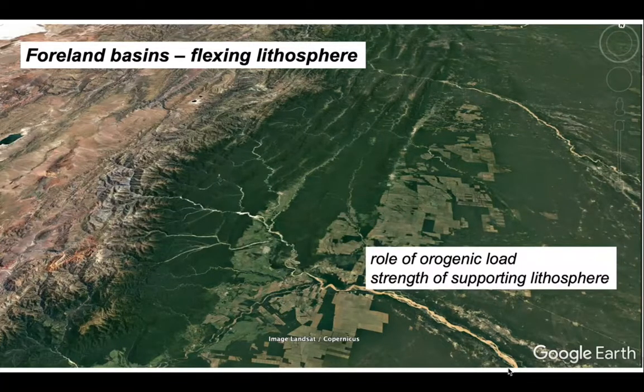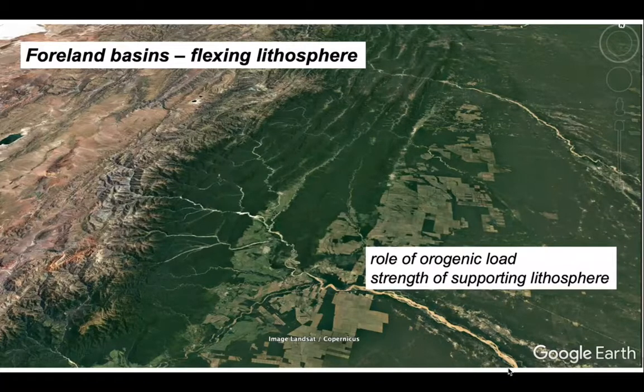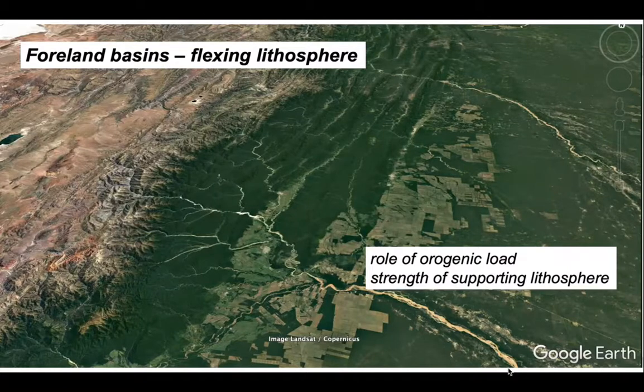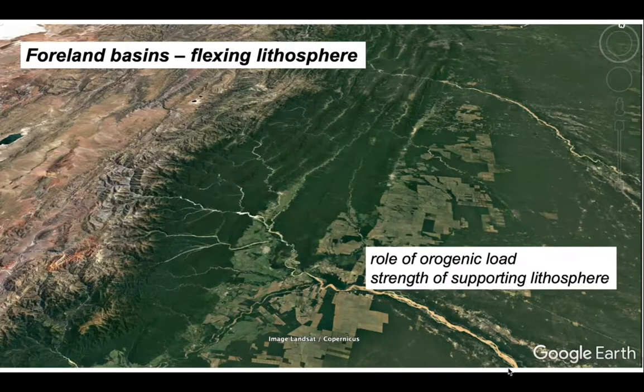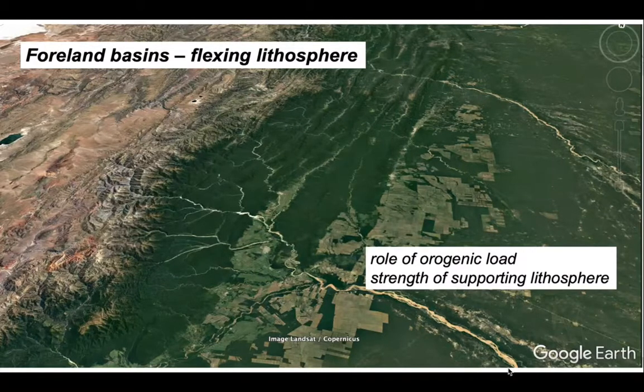In this video we'll be looking at the large scale behaviour of foreland basins, specifically the role of the orogenic belt as a load which will act on the adjacent lithosphere and we'll look at how the strength of this supporting lithosphere also controls the shape and subsidence history of the foreland basin.